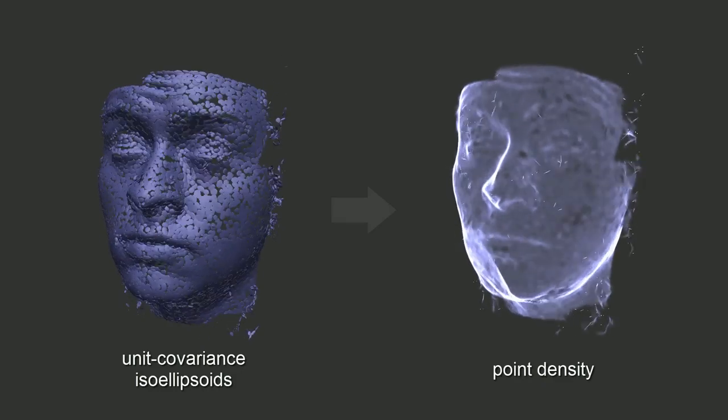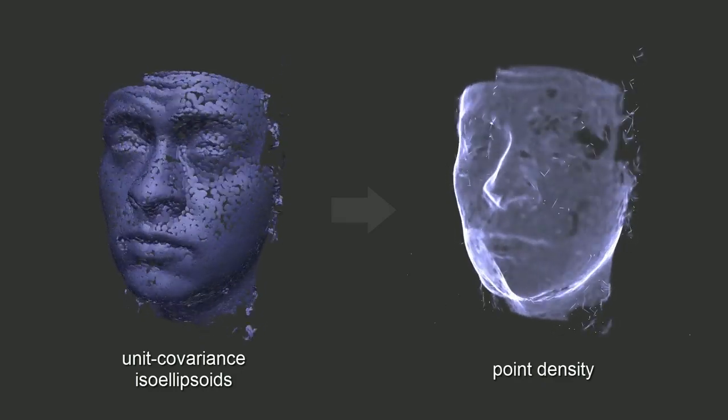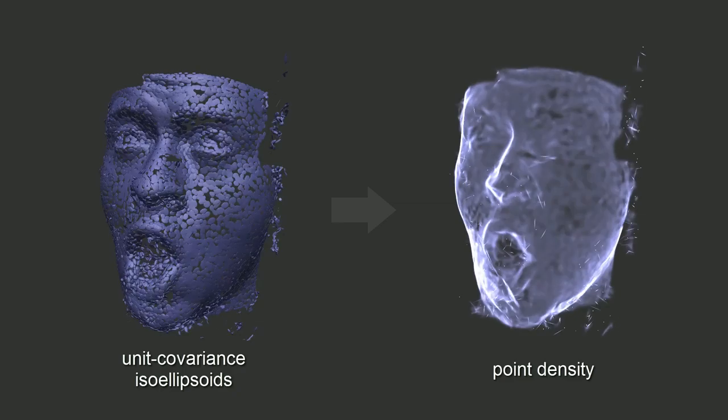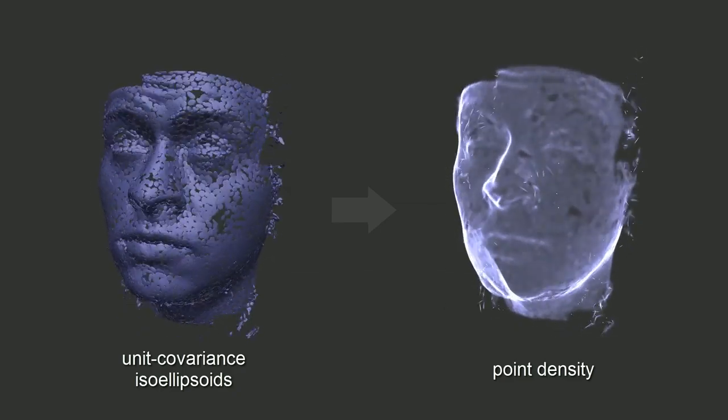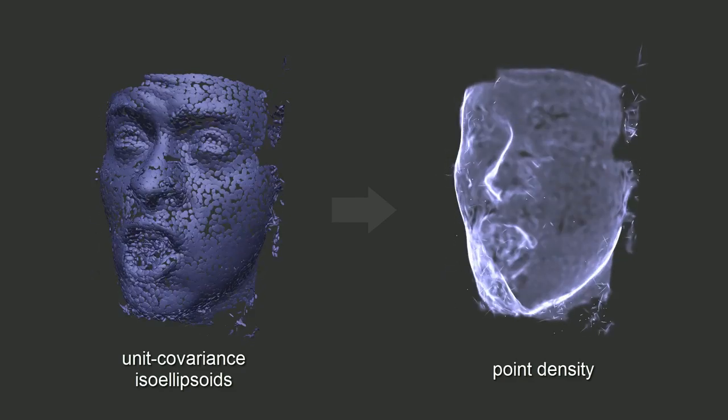A hierarchical expectation maximization is applied on the input points to quickly compute a Gaussian mixture representing their density with only a few Gaussian components. Here we see this density as well as the individual Gaussian components of the mixture.